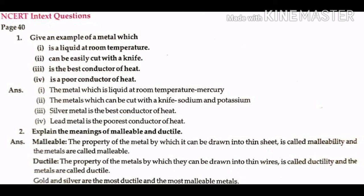Question 2: Explain the meanings of malleable and ductile. Answer: The property of a metal by which it can be beaten into thin sheets is called malleability, and such metals are called malleable. The property of metals by which they can be drawn into thin wires is called ductility, and such metals are called ductile. Gold and silver are the most ductile and the most malleable metals.